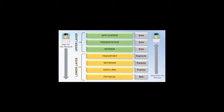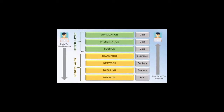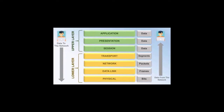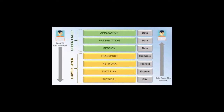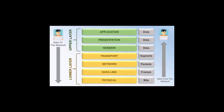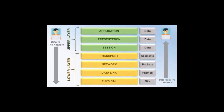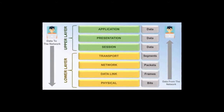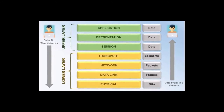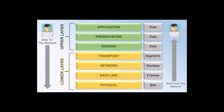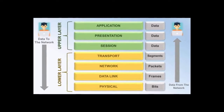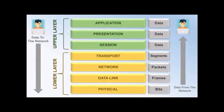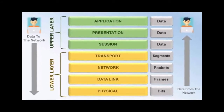Peer-to-peer networks generally implement some form of virtual overlay network on top of the physical network topology, where the nodes in the overlay form a subset of the nodes in the physical network. Data is still exchanged directly over the underlying TCP/IP network, but at the application layer, peers are able to communicate with each other directly via the logical overlay links, each of which corresponds to a path through the underlying physical network.